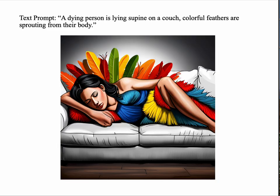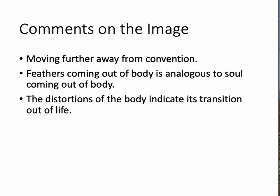Another one — same prompt, I did a bunch of iteration. Here the body is a little more distorted and I kind of like that. It looks like the body is breaking up, disintegrating, falling apart — agony, struggle — a little dynamism with that arm. Some people are going to think of that as a bug, as an error. I tend to think of it as a feature — if you contextualize it in some text that you're talking about. This image could be cropped a little bit — the leg goes on for a long time. The feathers coming up behind it are now different colors in unusual ways. That's an interesting image. We're starting to get some interesting stuff, moving away from convention. The feathers coming out of the body, again analogous to the soul coming out of the body. When you make these kinds of abstract images, you're often using analogies. And the distortion could indicate a transition out of life.